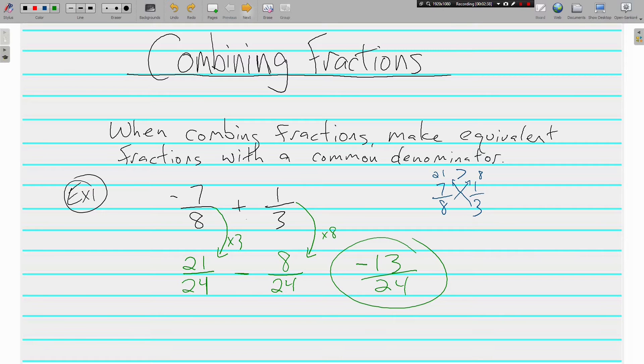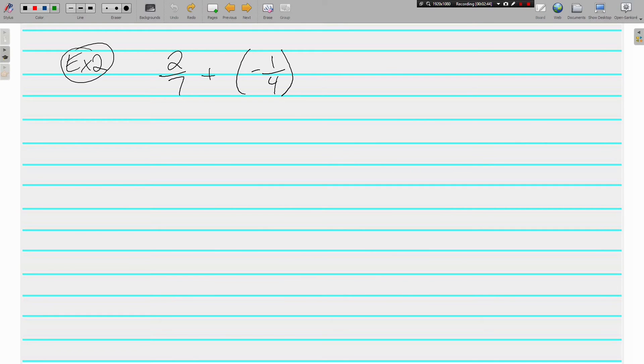Let's do another. Here we have 2 sevenths plus negative one-fourth, which I'm going to rewrite in OSC form. I don't like adding a negative, but that is the same thing as subtracting. So 2 sevenths minus one-fourth.